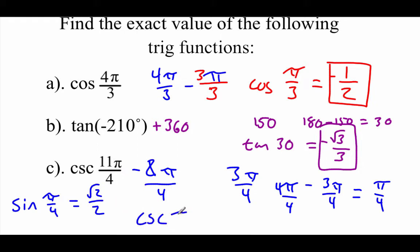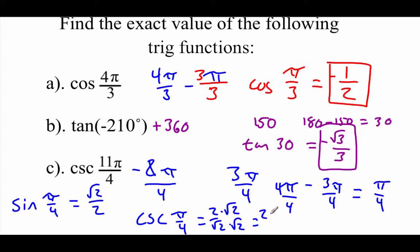So the cosecant of π over 4 is 2 over the square root of 2. Now if we work on rationalizing this, multiply top and bottom by √2, so we get 2√2 all over 2, and these 2's are going to cancel out, so all we have is the square root of 2.